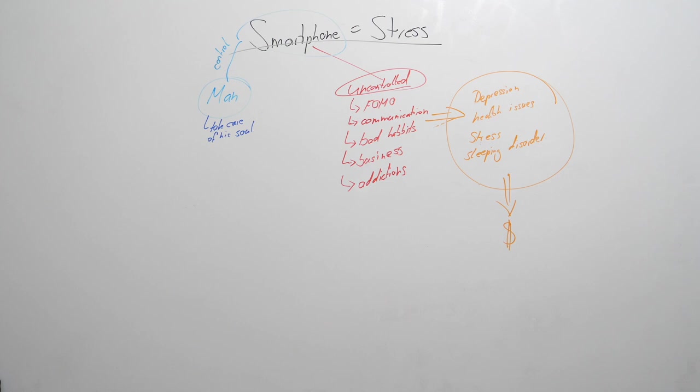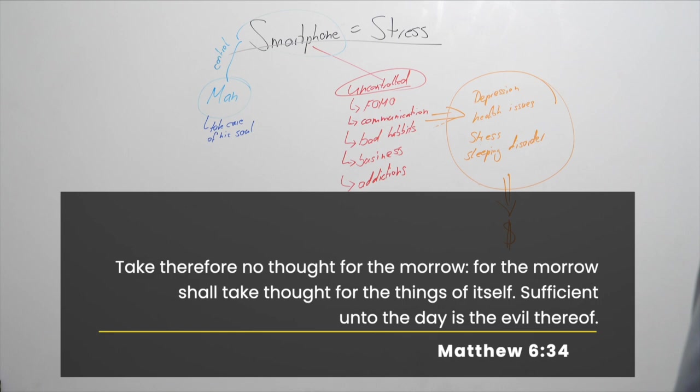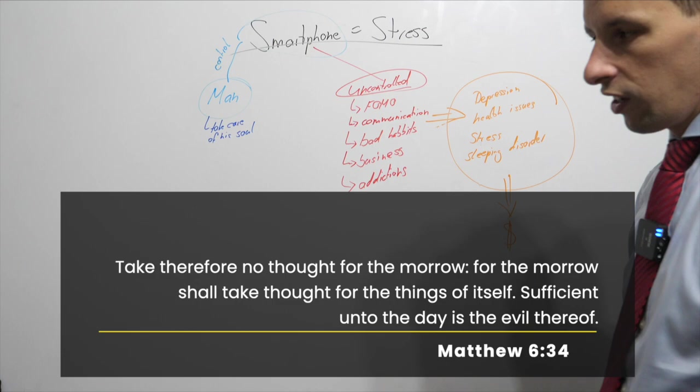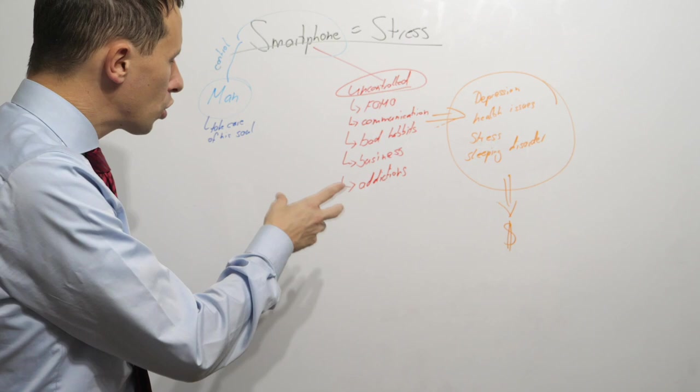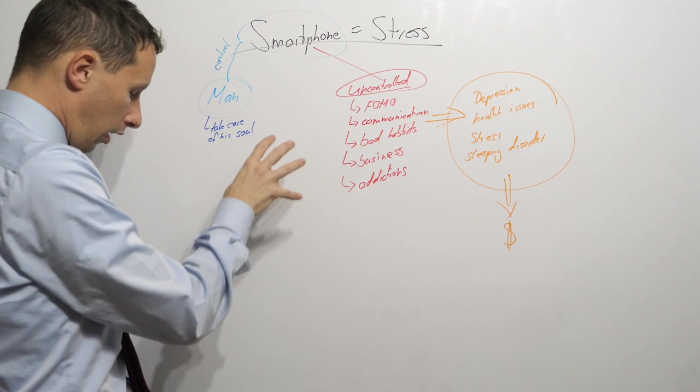If you turn your Bible to Matthew chapter 6, in verse 34, you're going to read, Take therefore no thought for the morrow. For the morrow shall take thought for the things of itself. Sufficient unto the day is the evil thereof. Look, who cares what so-and-so is doing? They're taking care of itself. Why would you want to be controlled by these thoughts when you should really take care of your soul?